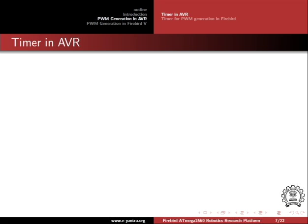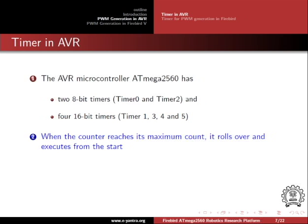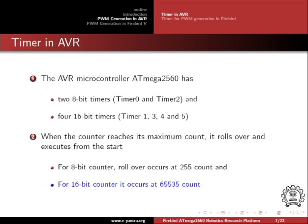To generate a PWM signal using a microcontroller, we use timers. The AVR microcontroller ATmega2560 has two 8-bit timers — timer 0 and timer 2 — and four 16-bit timers — timers 1, 3, 4, and 5. The timer is incremented by 1 for every clock cycle. When the timer reaches its maximum count, it rolls over and executes from the start. For an 8-bit timer, rollover occurs at 255; for a 16-bit timer, it occurs at 65535.